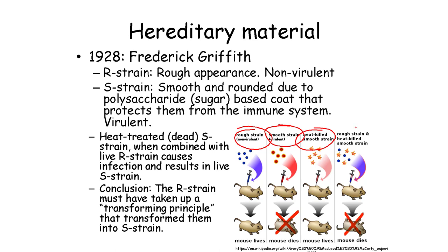However, when the heat-treated smooth strain bacteria was combined with live rough strain bacteria, the bacteria would become virulent and kill the mice. Griffith concluded that the rough strain bacteria must have picked up something from the remnants of the dead smooth strain cells.